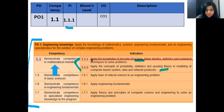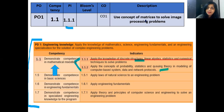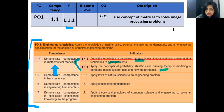PI 1.1.1 states: apply the knowledge of discrete structure, linear algebra, statistics and numerical techniques to solve problems. I used this same language to design CO1 and wrote: use concept of matrices to solve image processing problems. In place of numerical techniques to solve problems, I wrote image processing problems, and in place of discrete structure, linear algebra and statistics, I wrote matrices. I matched the CO statement with the performance indicator statement and chose the most relevant one for module 1.